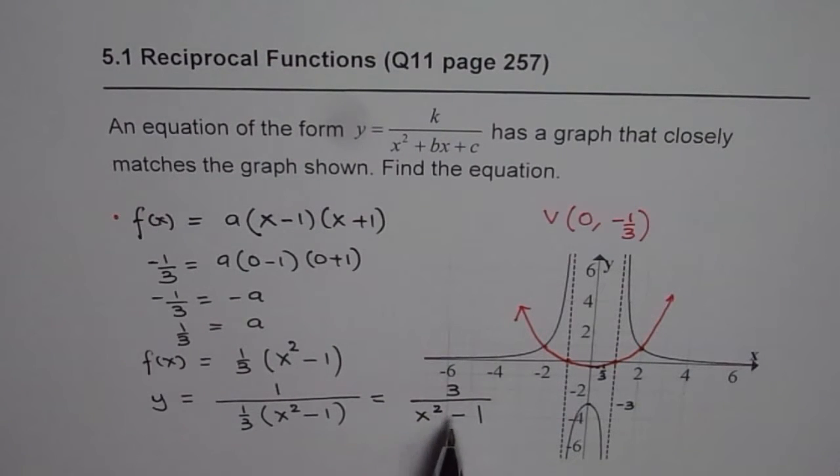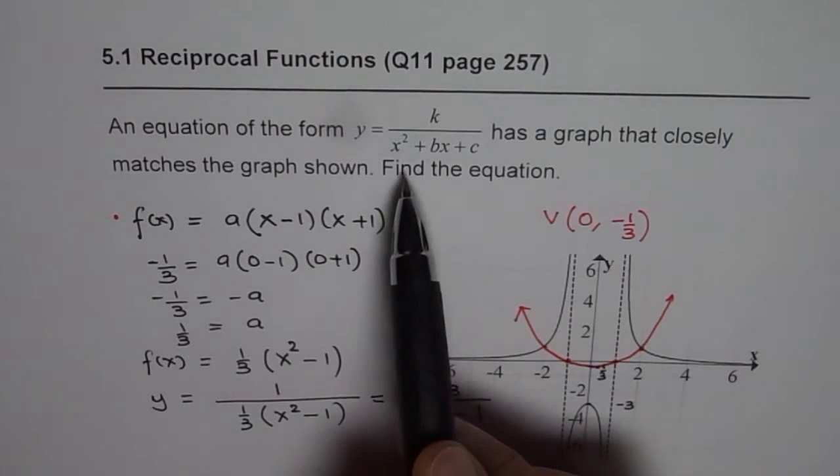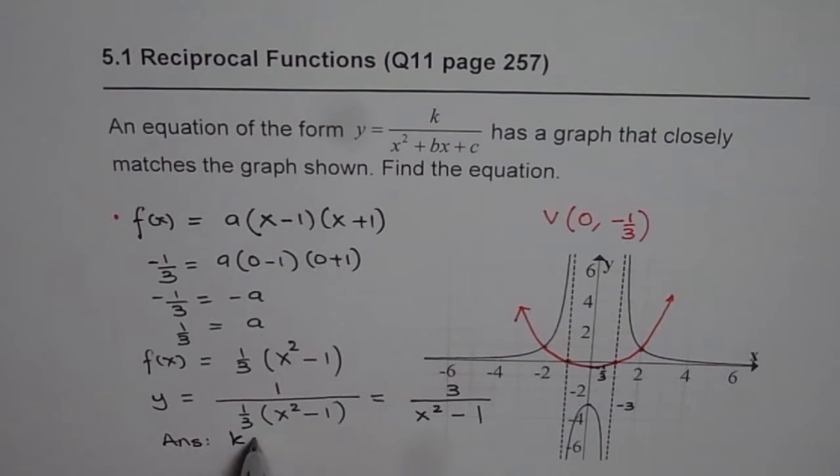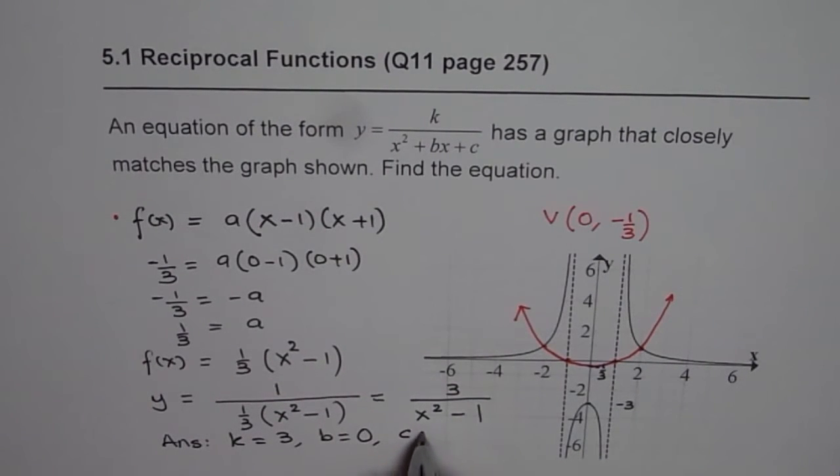Now we can compare all the coefficients and write down the values for k, b, and c. So our answer is k is equal to 3, b is equal to what? Since the coefficient of x is 0, b should be 0 and c is equal to minus 1.